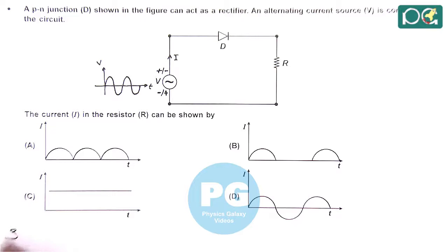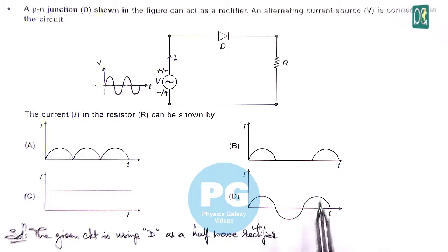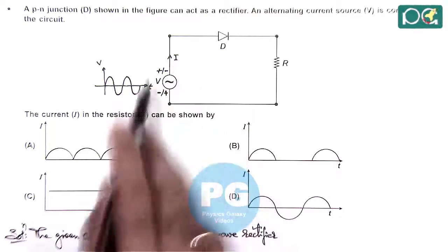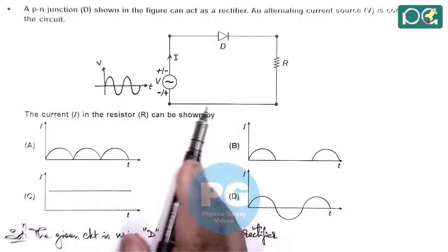Here in solution we can write. The given circuit is using D as a half wave rectifier. Because only half cycles are getting pass through the PN junction diode given in the circuit.